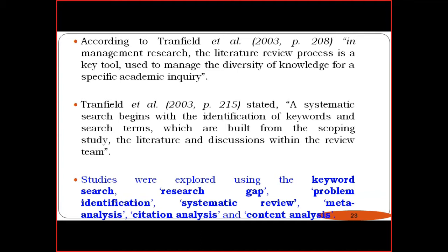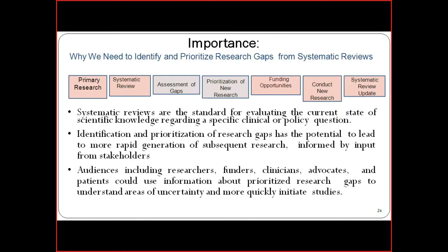Research gap identification involves: systematic review, meta-analysis, citation analysis, and content analysis. We must consider all these various terms and areas, which are very helpful in finalizing the research gap as well as the research problem.